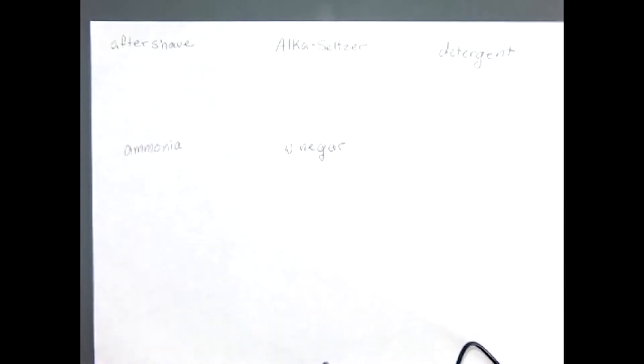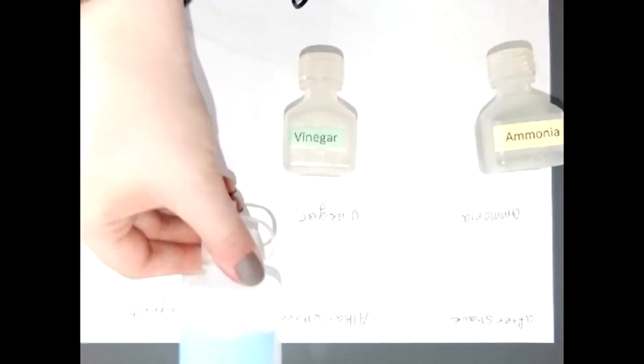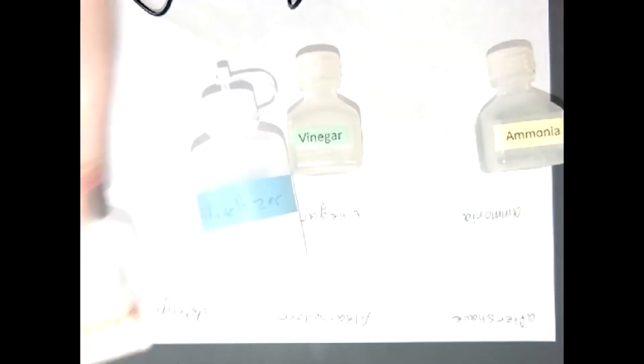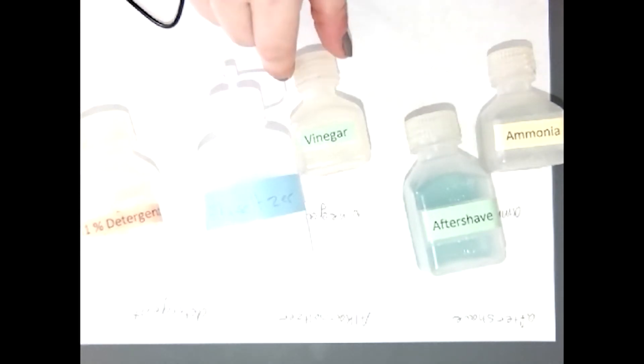We are working on exercise four, chemical aspects, assignment three, which is under the section acids, bases, and pH. Here we have a series of household chemicals that you might come into contact with in your everyday life.